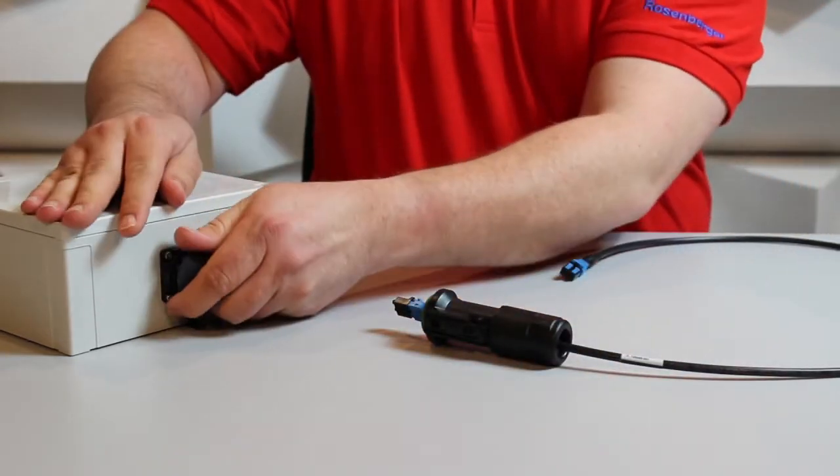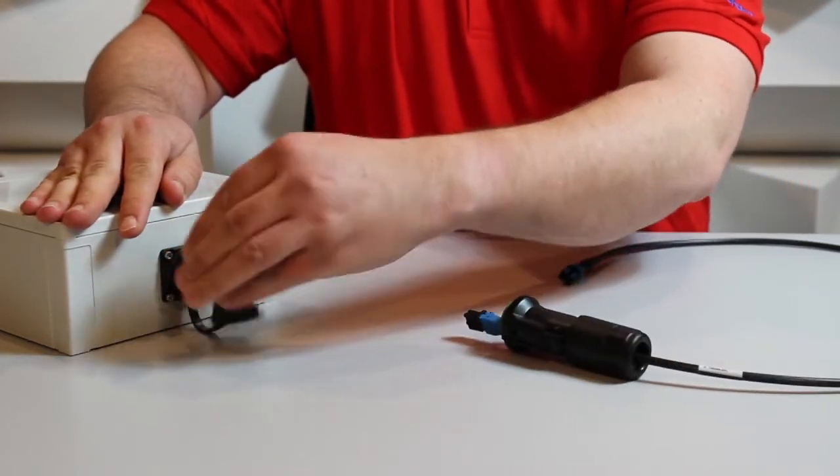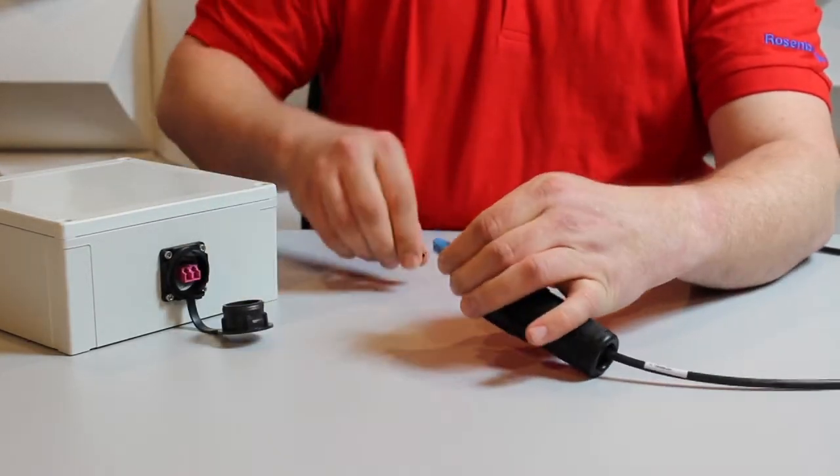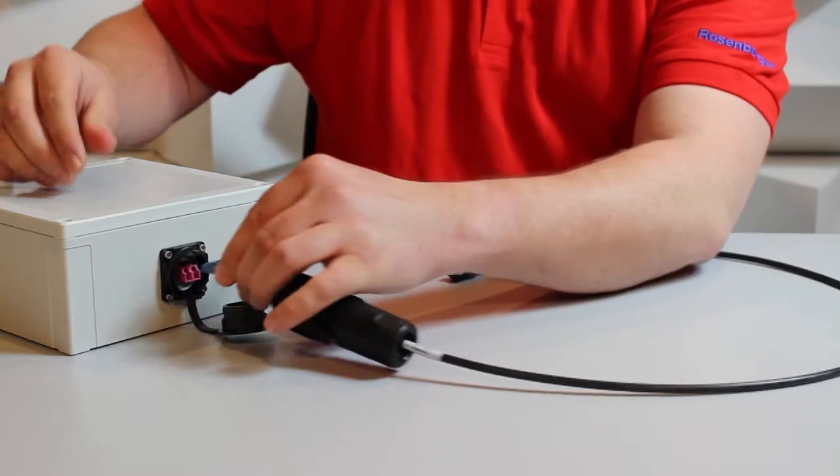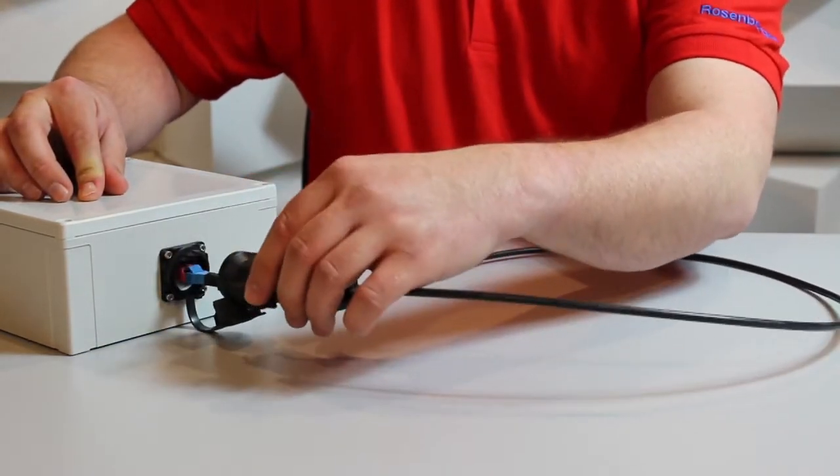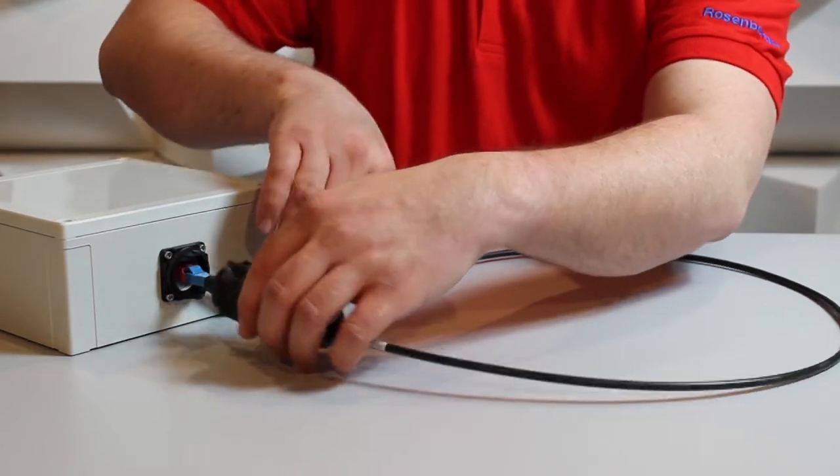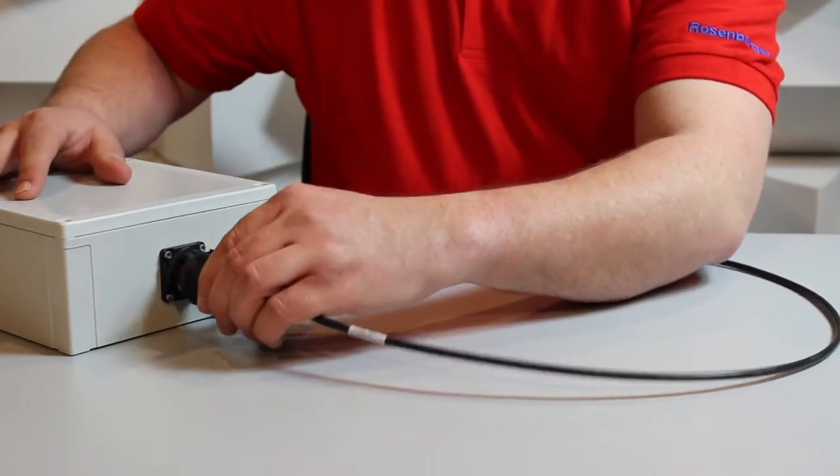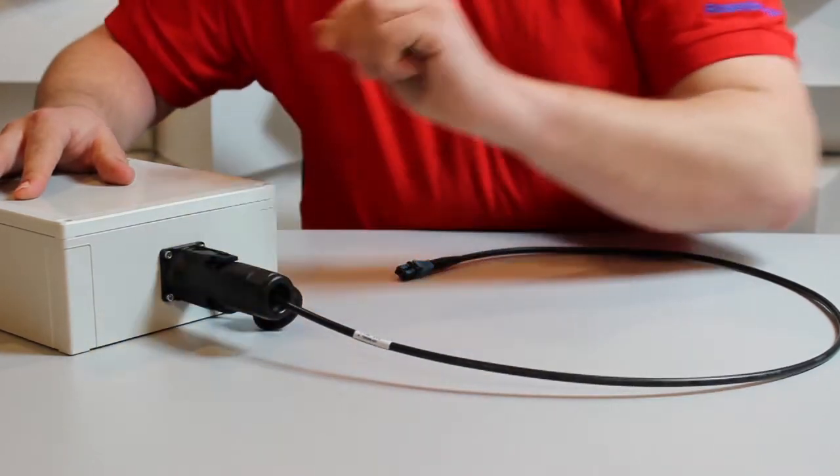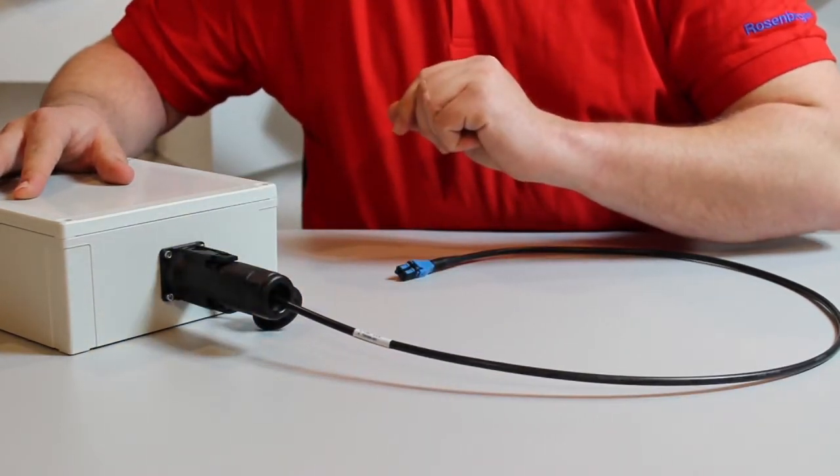Then on our device remove the protection cap and the same on our cable. Then all we need to do is click the Rosenberger Fiber Enclosure into place.